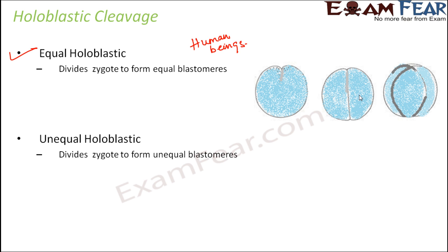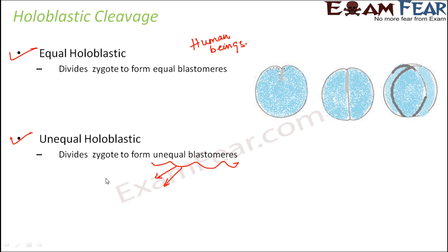In unequal holoblastic cleavage, complete cleavage still happens, but the two halves will not be equal — one will be bigger and the other smaller. The bigger blastomere is called the macromere and the smaller one is called the micromere. Micromere means small; macromere means big.